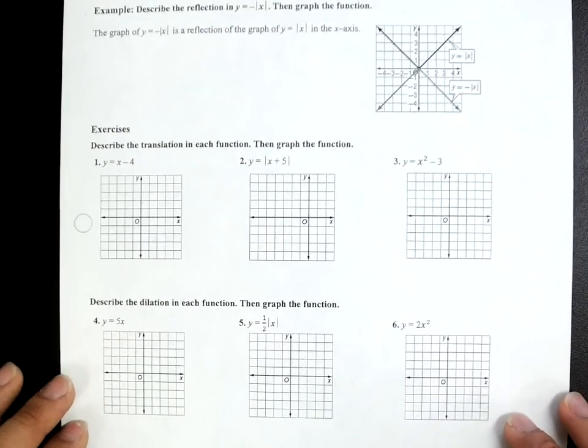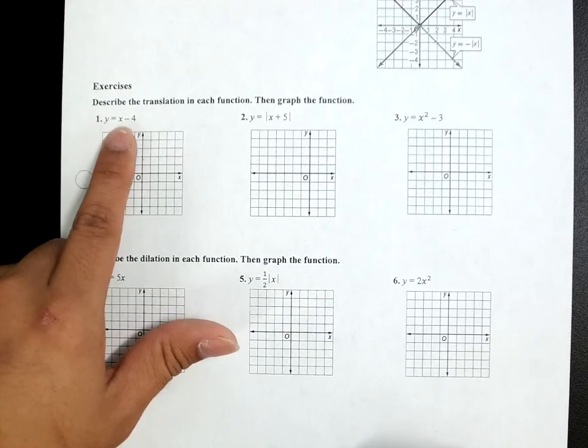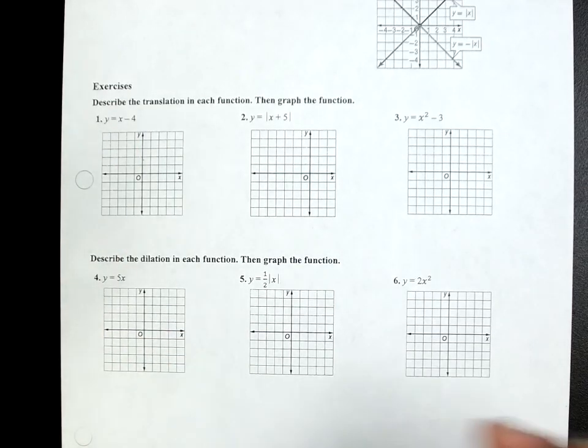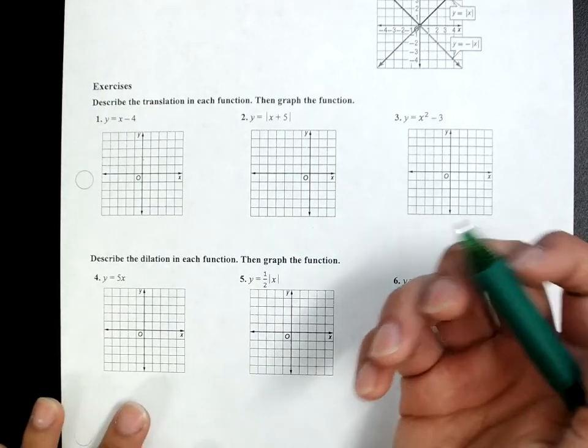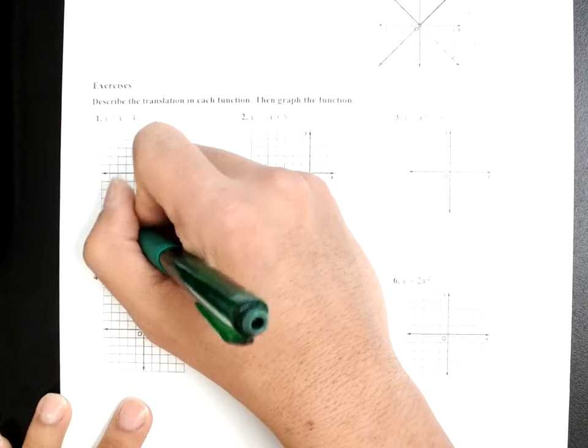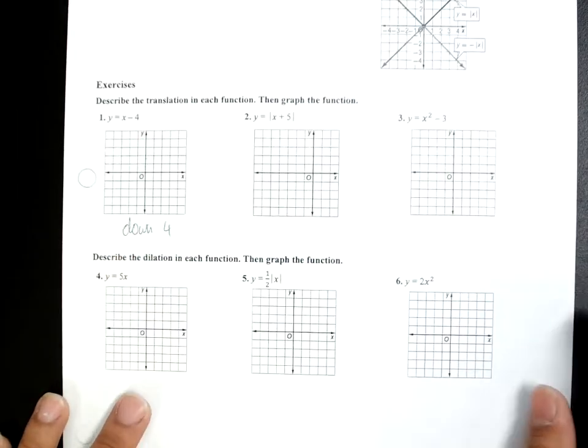Now, they want us to describe the transformation. We know if the number is outside of either parenthesis, absolute value bars, square root, whatever it is. If it's outside and it's minus, you go down that many numbers. So, in this case, it's 4.